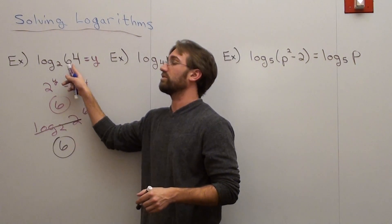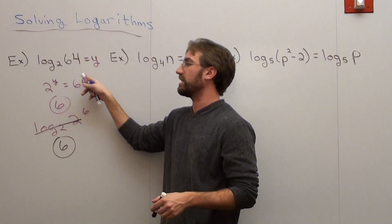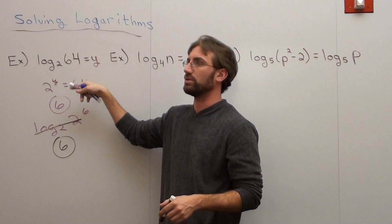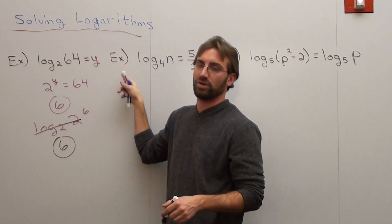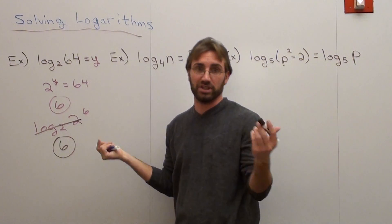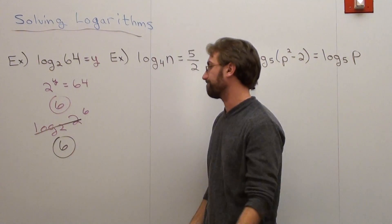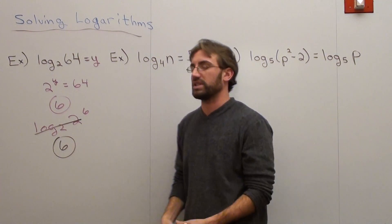What you would do to split 64 is use factor trees. That's 8 and 8 — 4 and 2, 2 and 2; and the other 8 is 4 and 2, 2 and 2 — so it's 2 to the power of 6. There are six 2s. Two different ways to do it — your choice.